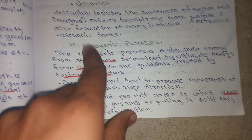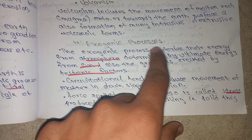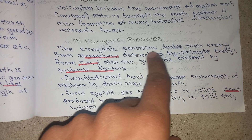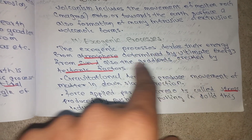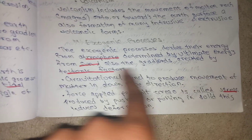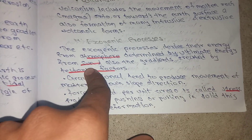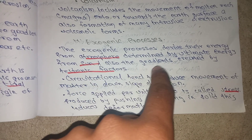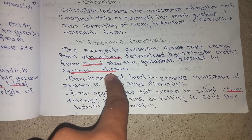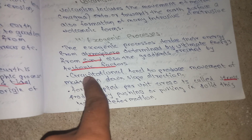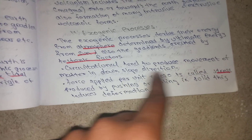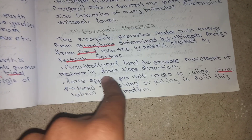Today we will learn about exogenic processes. The exogenic processes derive their energy from the atmosphere, determined by the ultimate energy from the Sun, and also the gradients created by tectonic factors.